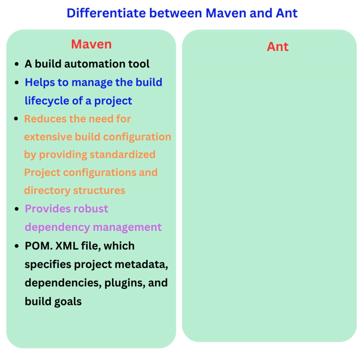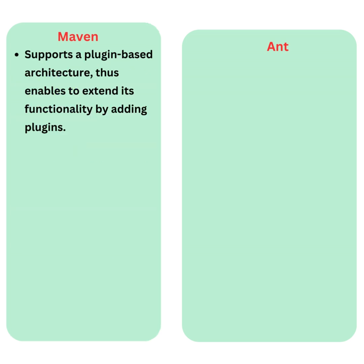Maven uses a pom.xml file which specifies project metadata, dependencies, plugins, and build goals. Maven supports a plugin-based architecture, which enables extending its functionality by adding plugins.